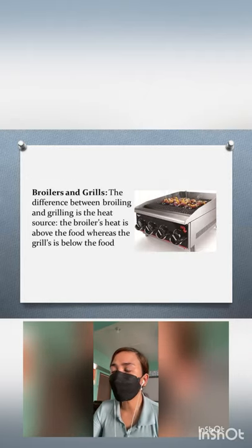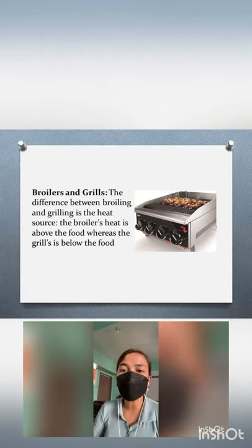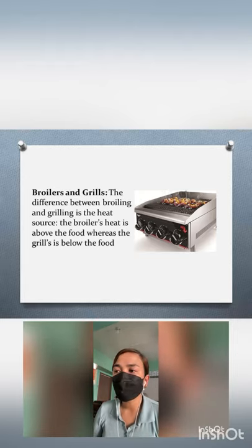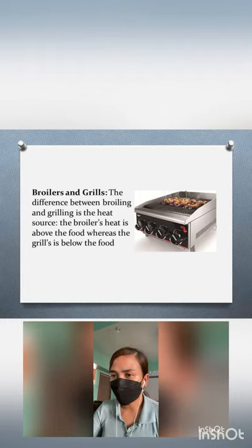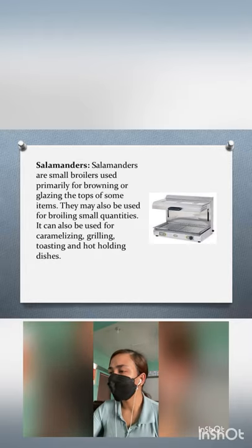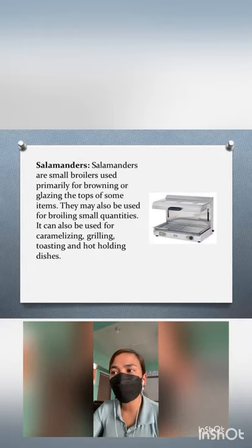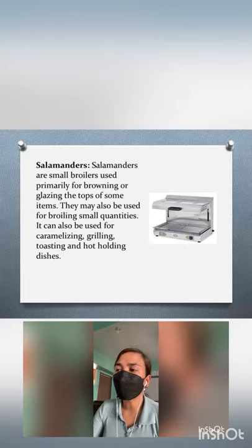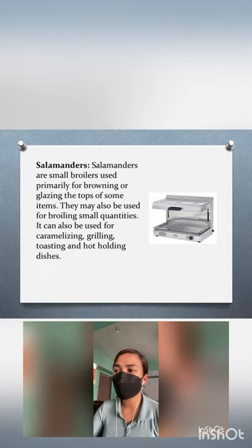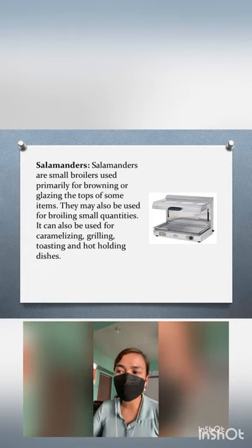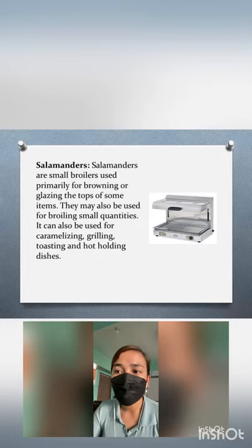Next, we have broilers and grills. The difference between broiling and grilling is the heat source: the broiler's heat is above the food, whereas the grill's heat is below the food. Salamanders are small broilers used primarily for browning or glazing the tops of some items. They may also be used for broiling small quantities, caramelizing, grilling, toasting, and hot-holding dishes.